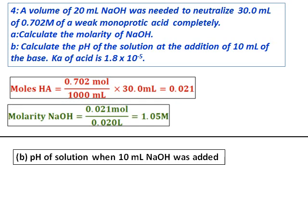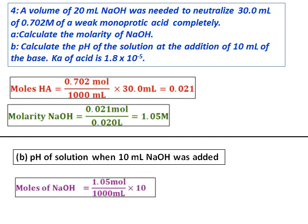For part B, we need to calculate the pH of the solution when 10 milliliters of sodium hydroxide has been added. First, let's calculate the moles of sodium hydroxide at that point. The moles of NaOH when 10 mL is added equals 1.05 × 10⁻² moles.